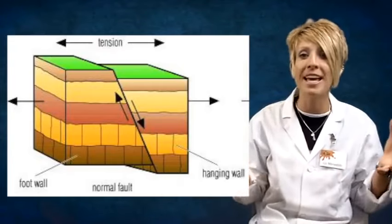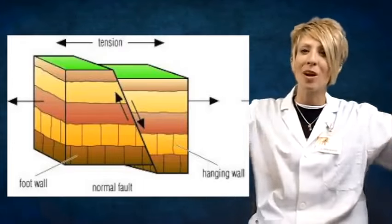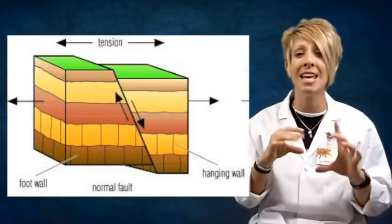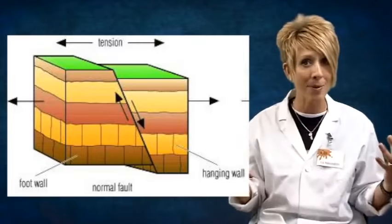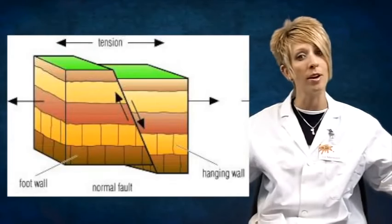What happens with rocks is when the rock gets stretched out, it becomes thinned in the middle. This happens at divergent boundaries because the plates are moving away from one another.